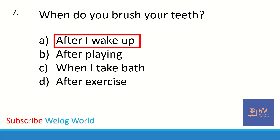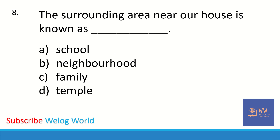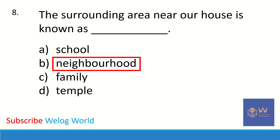The next question: the surrounding area near a house is known as dash. Options are school, neighborhood, family, or temple. The correct answer is neighborhood — the surrounding area near a house is known as neighborhood.